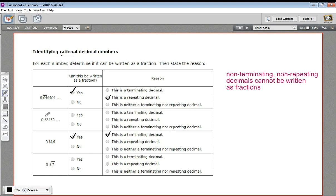Now, this guy right here, 0.58462, there's a dot, dot, dot, so it goes on forever. This is not a terminating decimal, and there's nothing there that repeats itself. So this is non-terminating, non-repeating. Those are the decimals that can never be written as fractions. So this one's a no, and the reason is it's neither terminating nor repeating.